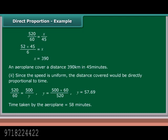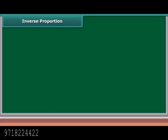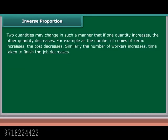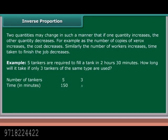Inverse proportion: Two quantities may change in such a manner that if one quantity increases, the other quantity decreases. For example, as the number of Xerox copies increases, the cost per copy decreases. Similarly, as the number of workers increases, the time taken to finish the job decreases.